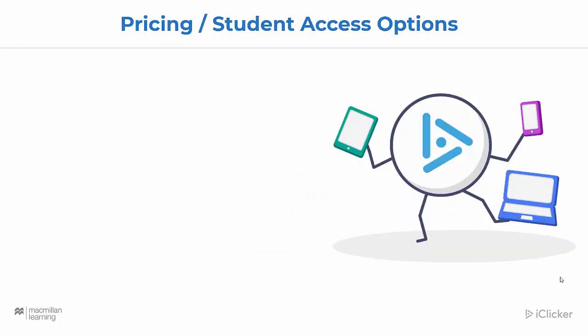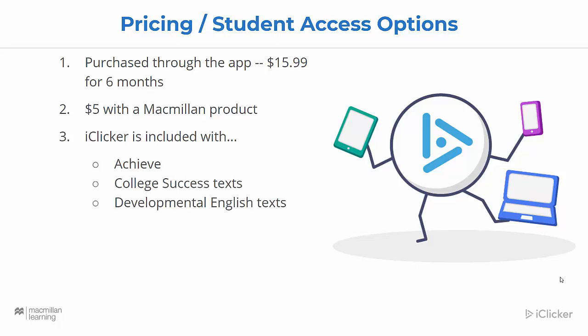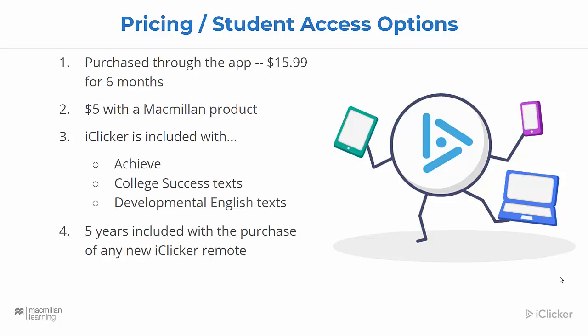iClicker is always free for instructors and institutions. For students, there are several affordable ways they can access iClicker. They can purchase a subscription directly through the student mobile or web app. Some instructors bundle iClicker access with another Macmillan Learning product — in some cases, iClicker is included for students at no extra cost. iClicker is included with most Achieve courses, college success, and developmental English texts. Five years of subscription time is included with the purchase of any new iClicker remote. Some departments or institutions purchase a site license to cover the cost of iClicker for their students. Be sure to let your students know how they can access iClicker for your course. All student accounts include attendance, polling, quizzing, assignments, and study tools, and one student account can be used in multiple classes in the same term for the same price.